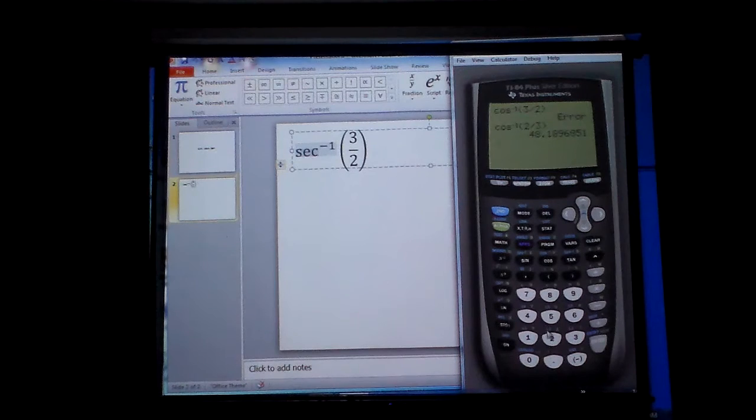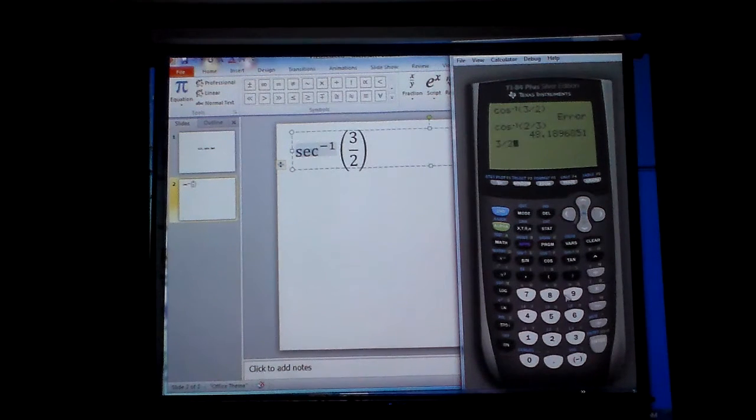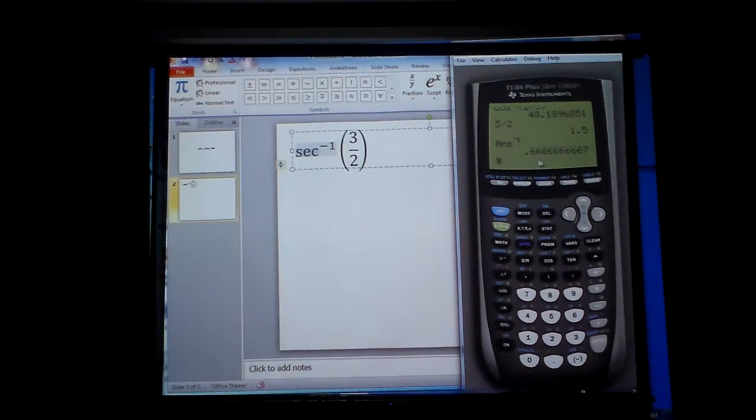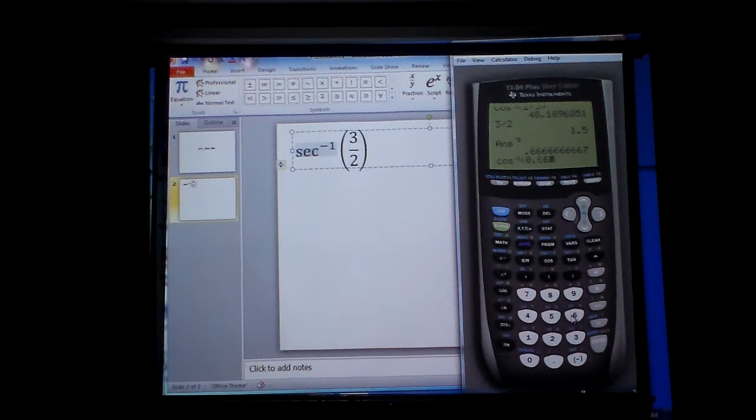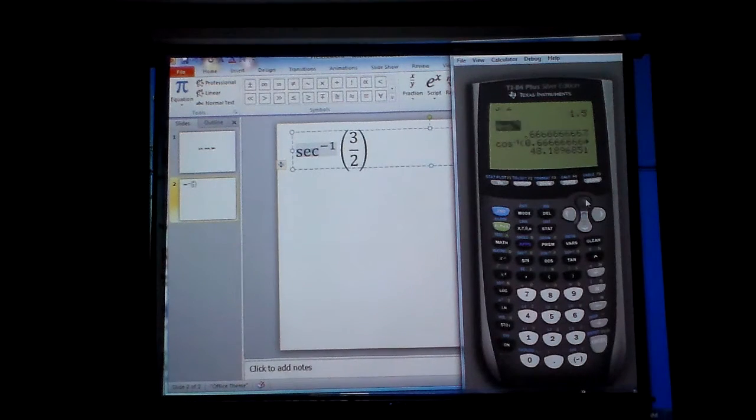Another way you could have done it is to take the 3 divided by 2, enter, and then get x to the negative 1, so that you end up getting this. That just makes it two-thirds as a decimal, if you see that. And then you would still go second cosine and have to type in the 0.6666666667, enter. And notice, I've got the same number, 48.189.